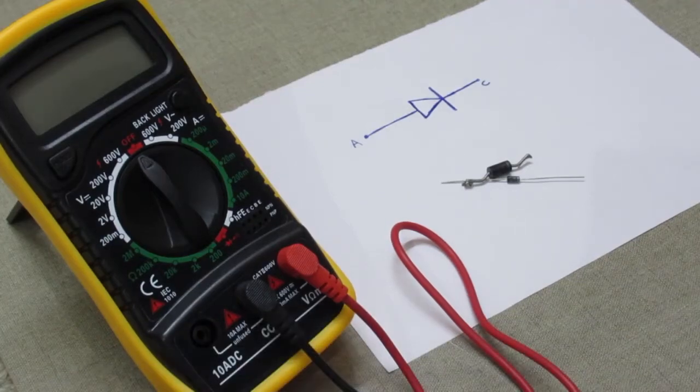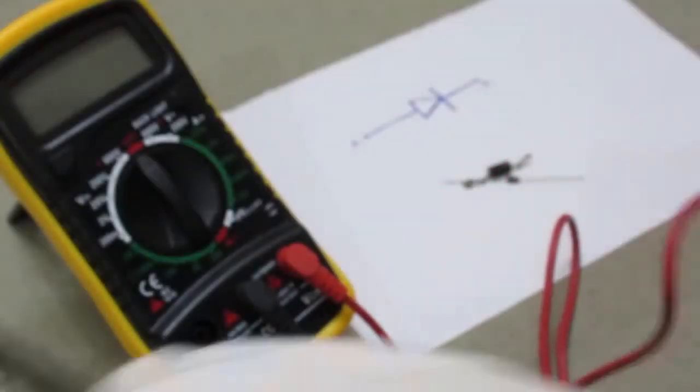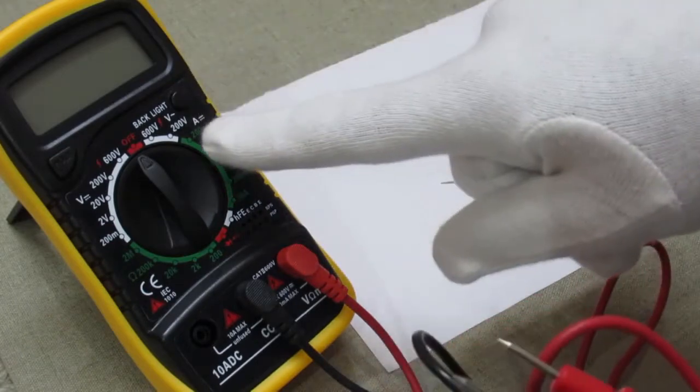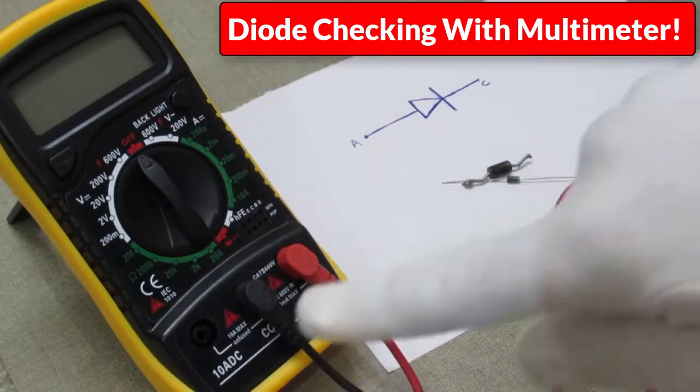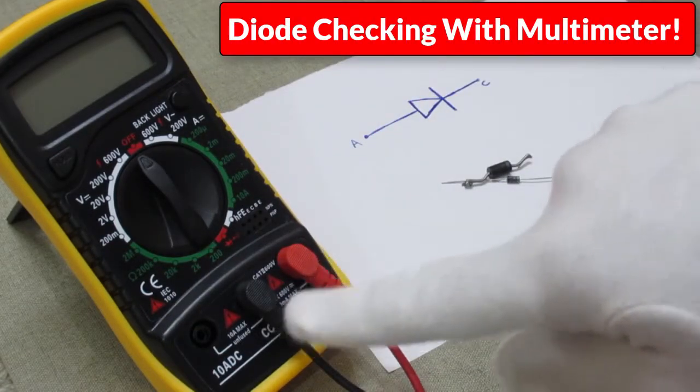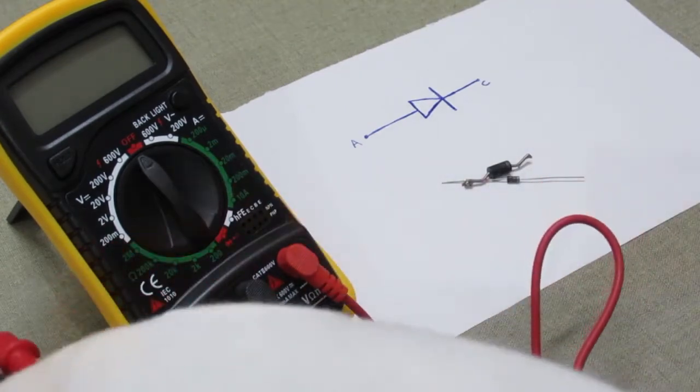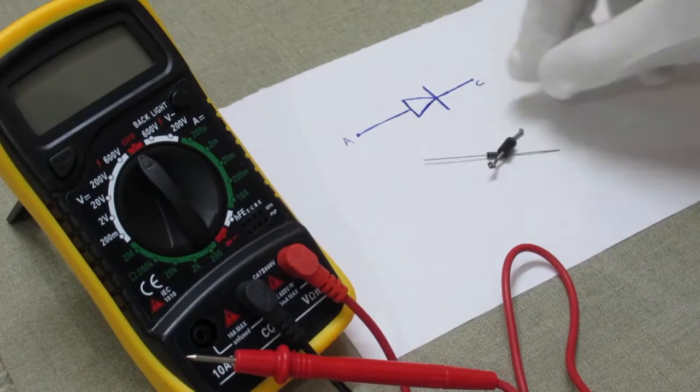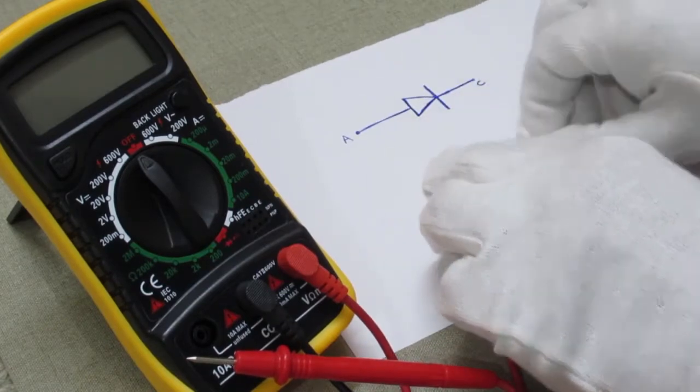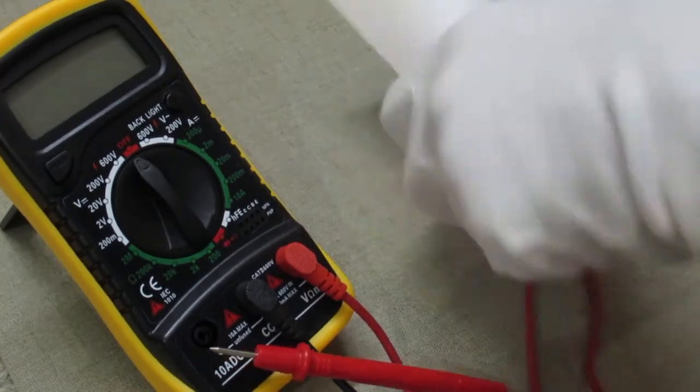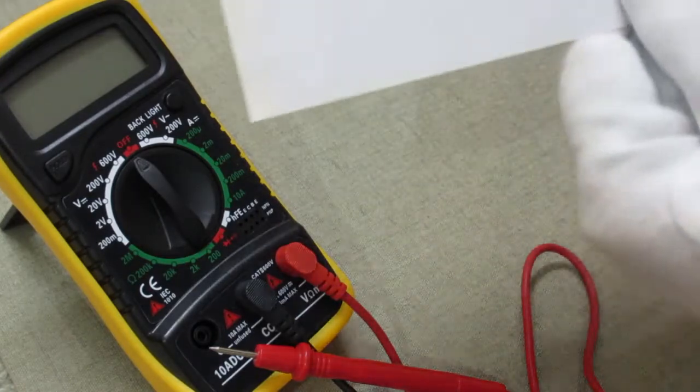Hi there, welcome back. In this video tutorial we will learn how to check diodes, so let's get started. Set both probes according to the showing video tutorial. These are diodes and now let's see the diagram of the diode.